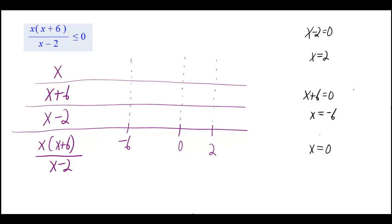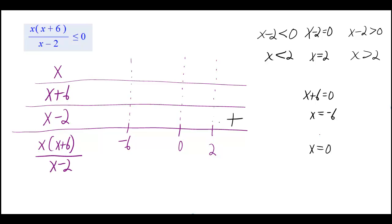The next question is, why do we care about these so-called critical points? Well, we can find out when x minus two is positive — in other words, when x minus two is greater than zero. That is going to happen when x is greater than two. We can also find out when x minus two is negative — that is going to happen when x is less than two. So our factor x minus two is positive when x is bigger than two, meaning when we plug in a value of x that is bigger than two.